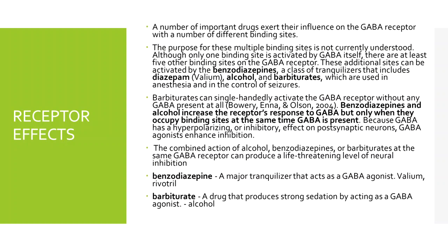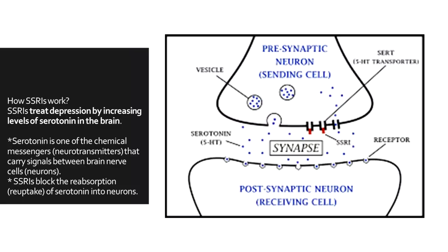How SSRIs work: SSRIs treat depression by increasing levels of serotonin in the brain. Serotonin is one of the chemical messengers or neurotransmitters that carry signals between brain neurons, and is responsible for mood regulation. SSRIs inhibit the transfer of serotonin from the presynaptic neuron, or sending cell, to the postsynaptic neuron, or receiving cell.